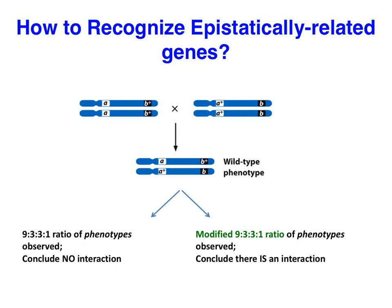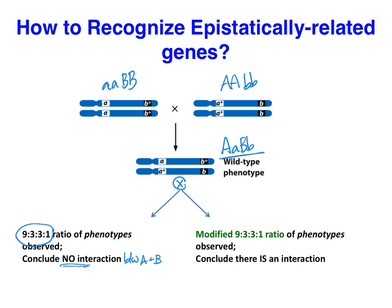We've talked previously about a typical dihybrid cross. Here we're looking at an individual with aaBB crossed with AAbb, producing heterozygous individuals with the wild-type phenotype. If we self-cross or cross two dihybrids, we would expect a 9:3:3:1 ratio of phenotypes. From that, we can conclude there is no epistatic interaction between A and B. However, if we see a modified 9:3:3:1 ratio, that would mean there is an epistatic interaction between A and B.